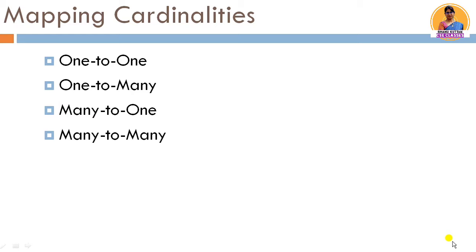The last important topic is mapping cardinalities — one-to-one, one-to-many, many-to-one, and many-to-many relationships. These tell us what relationship exists between two or multiple entities.